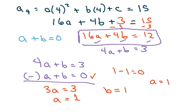So we have a equals one, b is negative one, and we knew that c equals three.